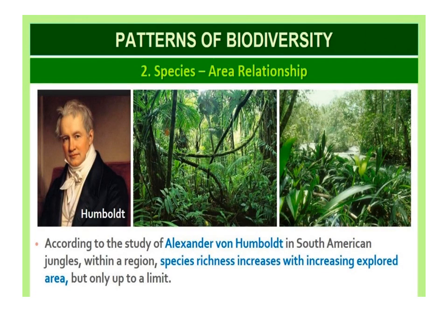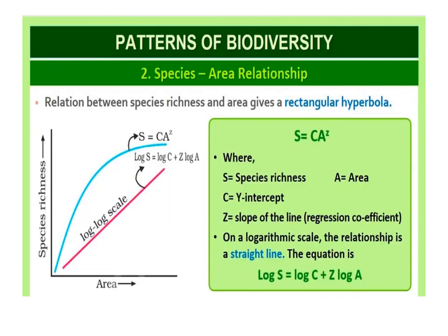Regarding the species-area relationship, German naturalist and geographer Alexander von Humboldt made pioneering extensive explorations in the wilderness of South American jungles. He observed that within a region, species richness increases with increasing explored area, but only up to a limit. The relation between species richness and area for a wide variety of taxa — including angiosperm plants, birds, bats, and freshwater fish — is found to be a rectangular hyperbola.